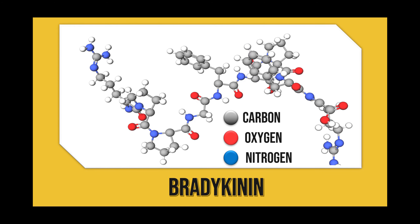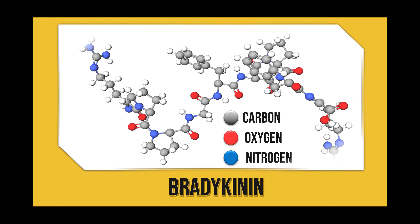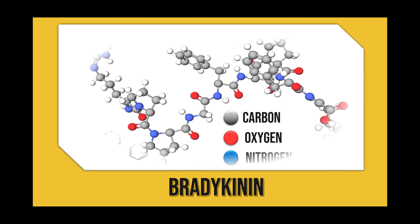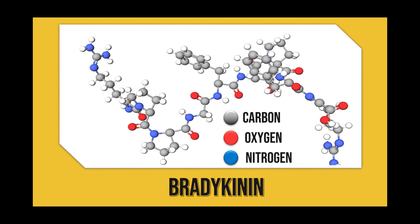Next, bradykinin is a protein that promotes inflammation. It causes the enlargement of the arteries and also functions as a pain-signal link. This is a substrate with the chemical structure: carbon in grey, oxygen in red, and nitrogen in blue colour.